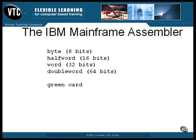A summary of the assembly language instructions, and a few other things, are printed on what is known as a green card that's supplied as part of the documentation. You really can't program this assembly language without one. For different versions of the machine, the green card is different colors, but the actual color doesn't matter — they always call it the green card.